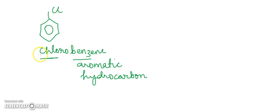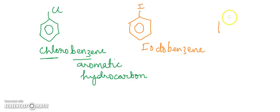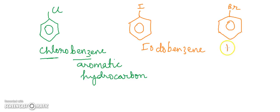In the same way, we can have a benzene ring with iodine — this will be iodobenzene. A benzene ring with bromine — this is bromobenzene.